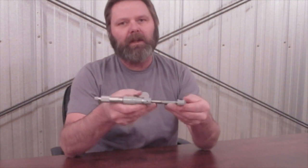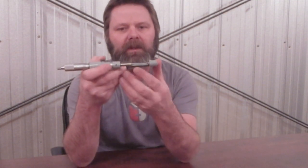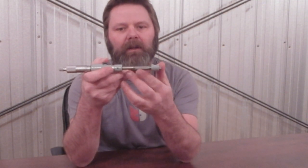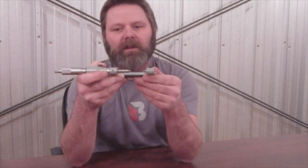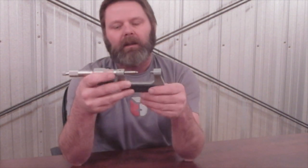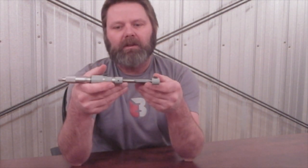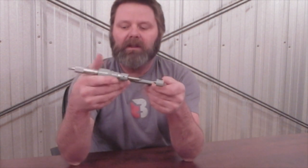A couple of other ways they can check the threads are with the thread micrometer. It's pretty much like a normal micrometer, except the anvil on these are shaped to go inside the threads. And some of these are replaceable for different pitches of threads. Some are dedicated to a specific thread. Not a lot of machinists or gunsmiths are going to have these. They're a little more pricey.